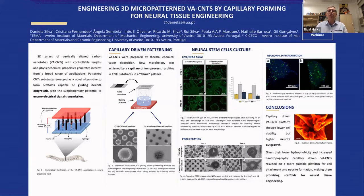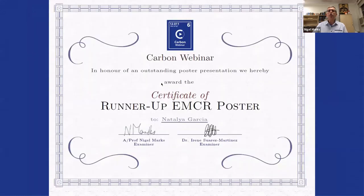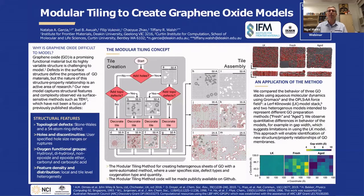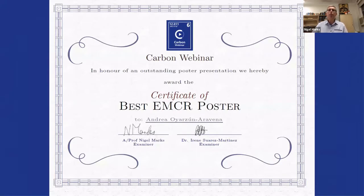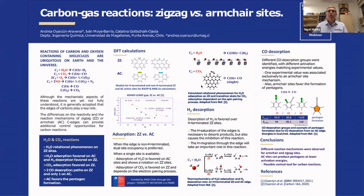Our next prize category is for early to mid-career researchers. In the EMCR category, the runner-up is Natalia Garcia, whose topic was a software approach to create graphene oxide. The winner in the EMCR category is Andrea Barrazin Aravena, whose topic was quantum chemistry for gas reaction studies on zigzag and armchair sites. The two EMCR winners will also present a short talk next year, so we can look forward to those presentations too.